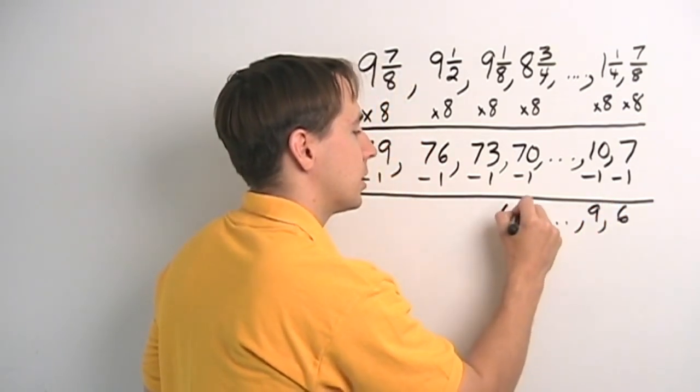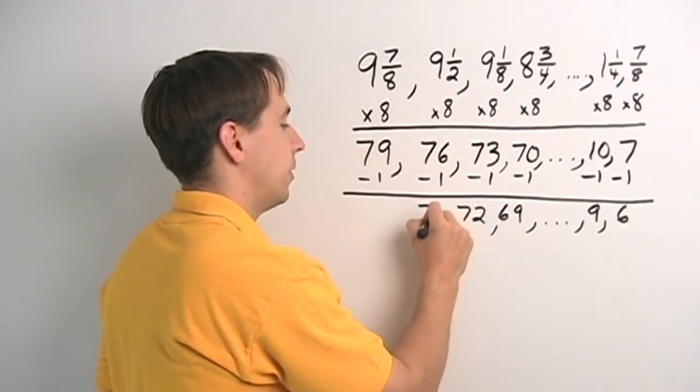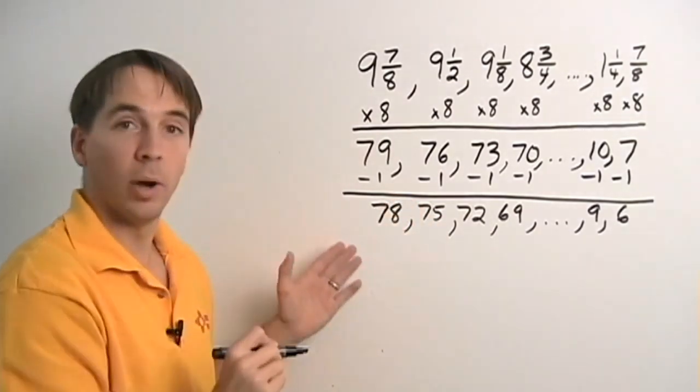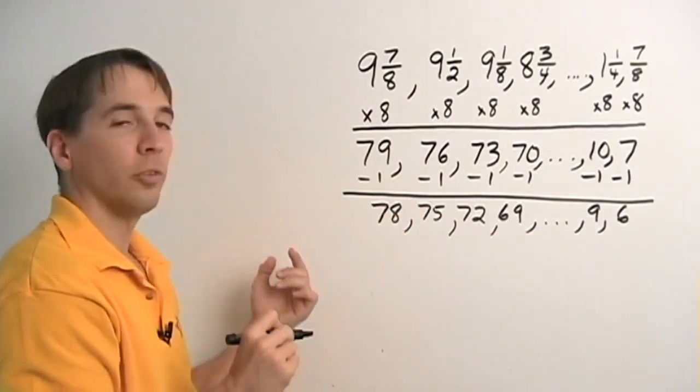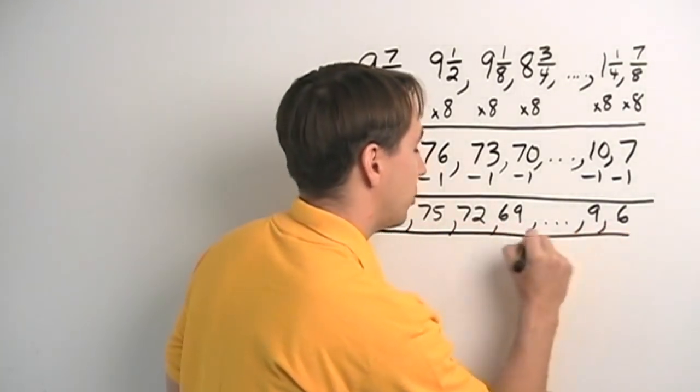17, and we have 69, 72, 75, 78. And we know how to deal with this list. These are all just multiples of 3. We can divide them all. Just divide them all by 3.